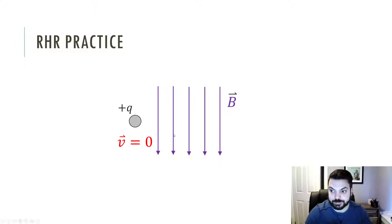Here's one more. Positive charge at rest next to a magnetic field. What do you think? Well, if you're doing this, there's nowhere to point your index finger. There's no V. And if we think about the equation again, if V is zero, there is no force.